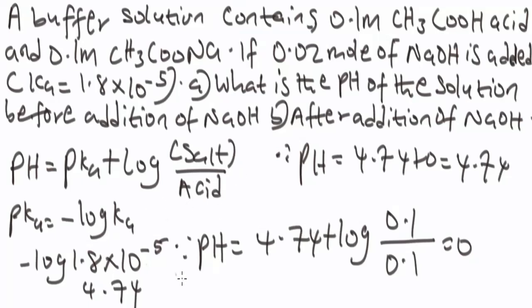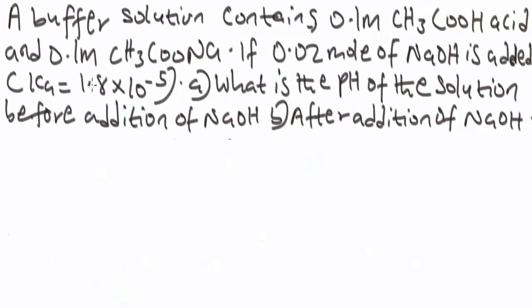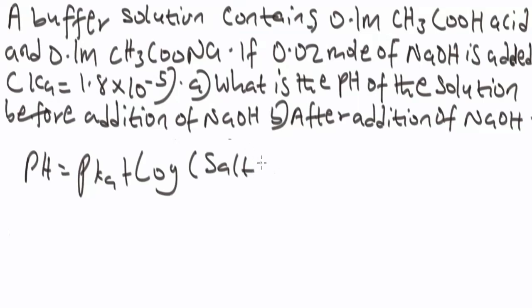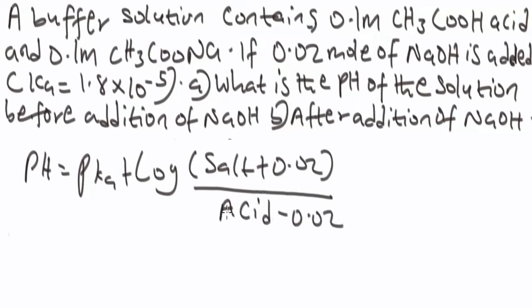Now let's solve for the pH after addition of sodium hydroxide. When NaOH is added, the concentration of the conjugate base (salt) will increase by 0.02, whereas the concentration of the acid will decrease by 0.02. So we have: pH = pKa + log([salt + 0.02] / [acid − 0.02]).